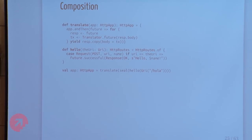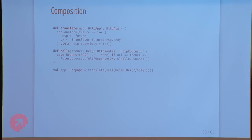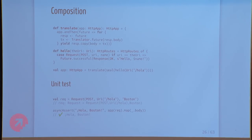Another thing you like to be able to do is composition. I think of combination as taking services and putting them together horizontally. Composition is taking services and putting them together vertically — decorating a service with new behavior. We define translate as what we call a middleware in HTTP4S: a function from an HTTP application to another HTTP application. It takes any response body that comes back and runs it through our translator service. Now we can define services in English and wrap them in the translate middleware to get a Spanish version.